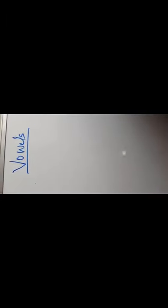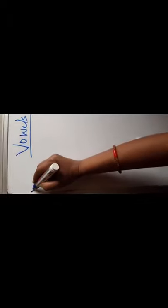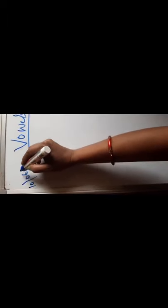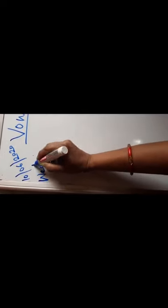Verbals — V, O, W, E, L, S — verbals. Today's date is 10th of June 2020, and today's day is Wednesday. W, E, D, N, E, S, D, A, Y. Wednesday.